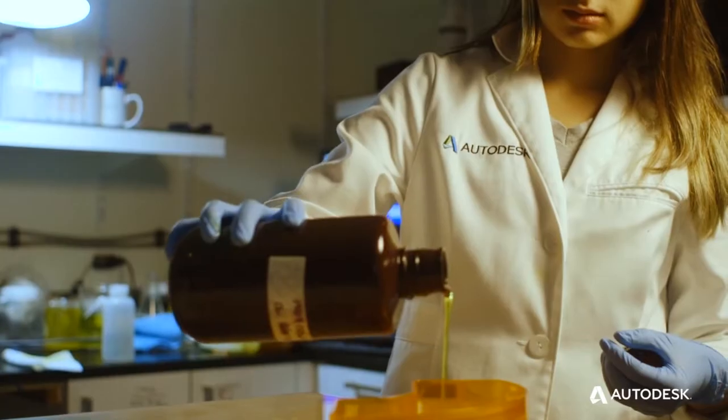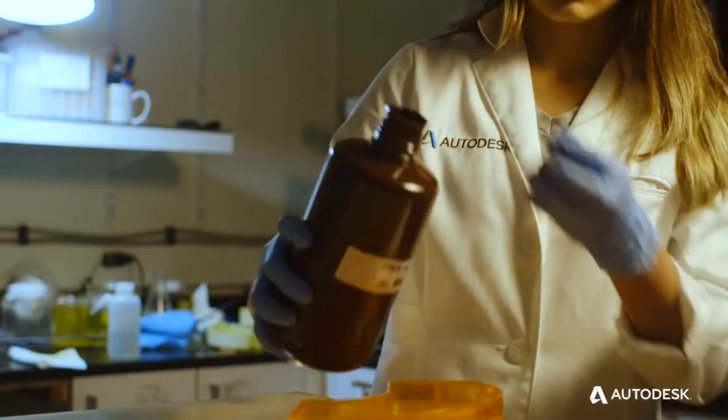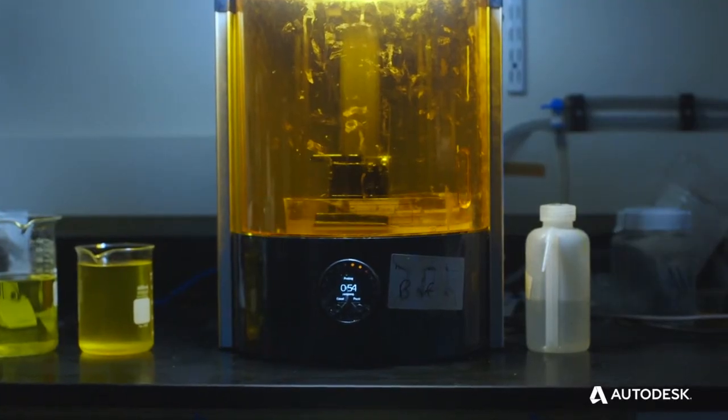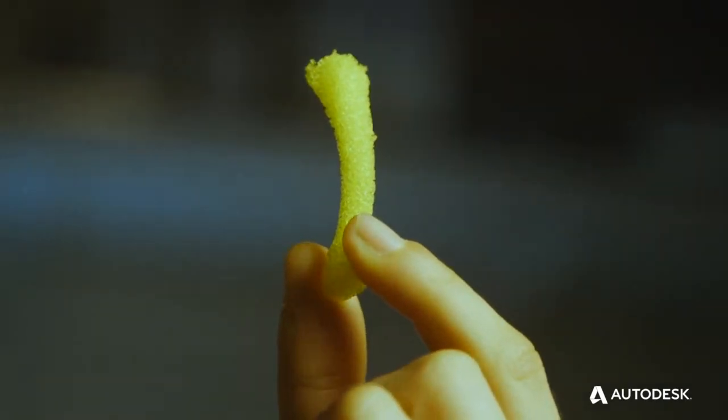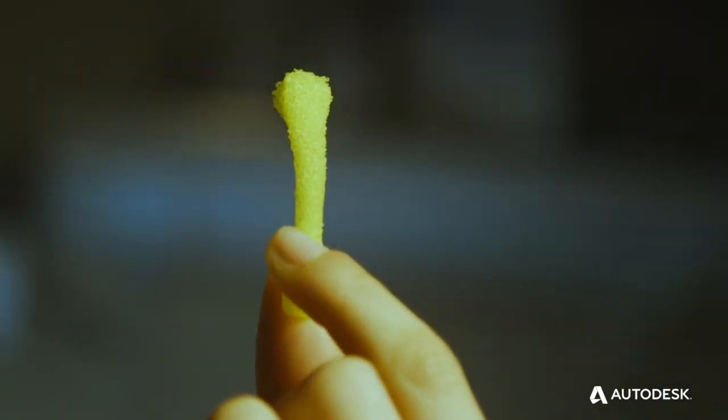Our work in bioprinting is we're not developing printers as much as we're working with primarily the ember printer and developing bioresins for the ember printer. But the applications for that would be things like producing a scaffold out of a hydrogel. Hydrogels are the substances that cells like to adhere to. And if you produce a trabecular lattice, you could grow cells on those trabecular lattices, potentially cartilage or bone.